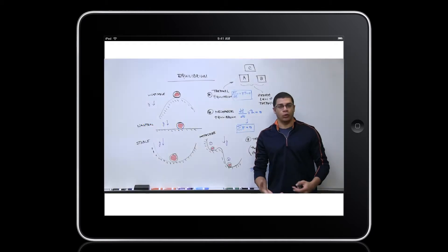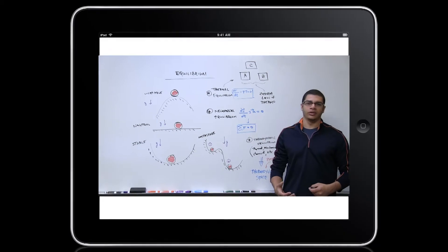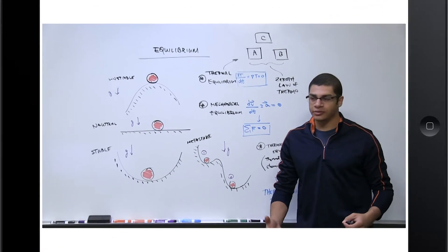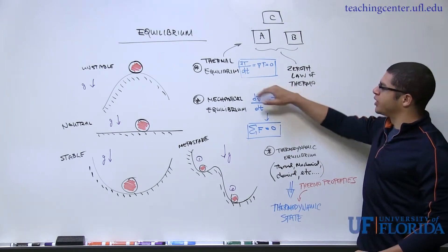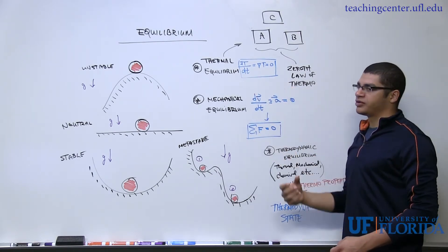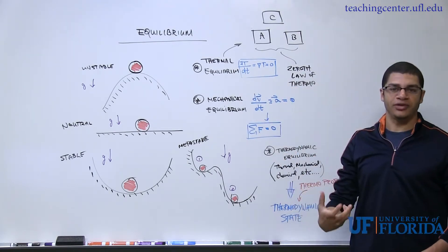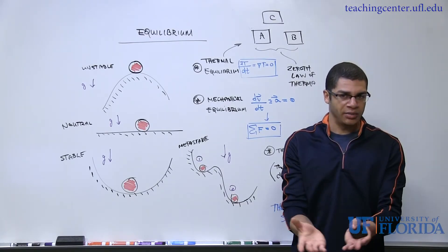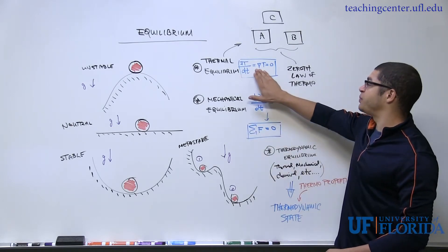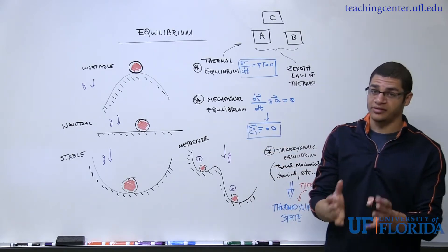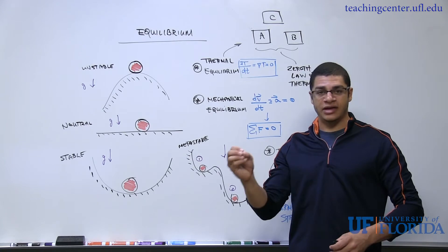I want to talk a little bit about equilibrium and how it relates to the subject of classical thermodynamics. First off, let's talk about thermal equilibrium. The way I've defined it here is that the time rate change of temperature of a given thermodynamic system is equivalent to the spatial gradient of temperature in that system, and this is equal to zero.